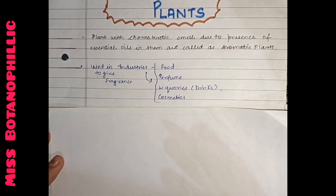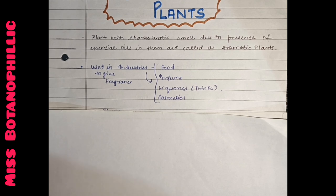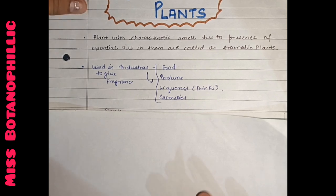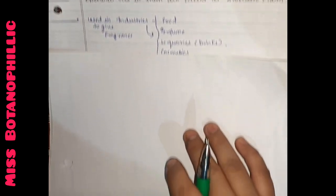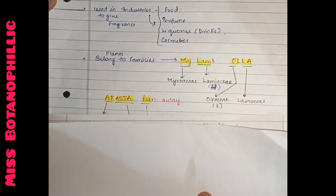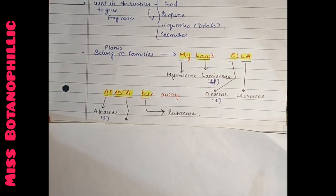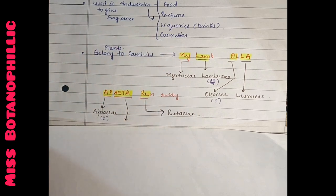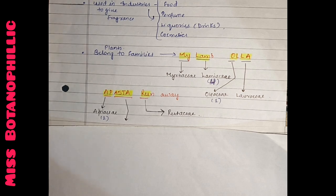Now we will see which families are considered as aromatic plants. For this, I have made a trick of how you remember those families. It is not that only those families I mentioned in this trick - there are other families - but these are such families which are very important. In every topic of economic botany, you should know 10 examples.